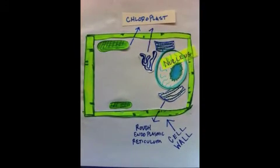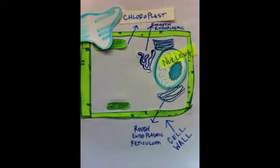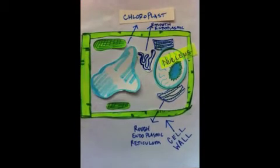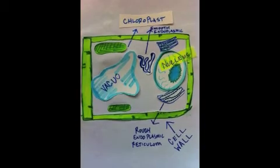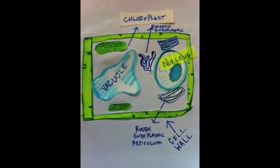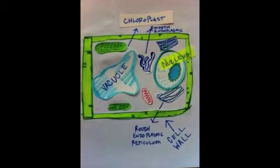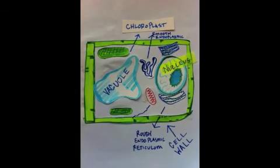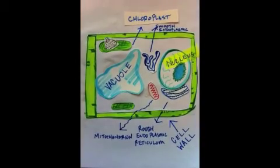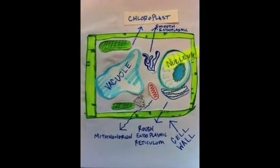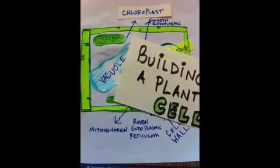Now, smooth endoplasmic reticulum. And the endoplasmic reticulum. Here comes the Golgi.